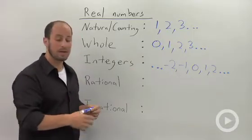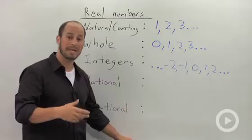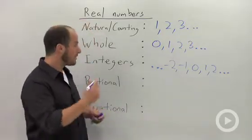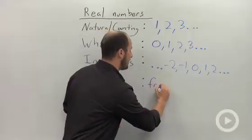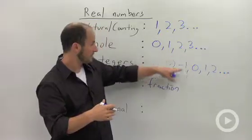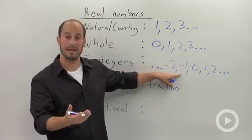Next are what we call rational numbers. A rational number is any number that can be written as a fraction. This can get a little tricky because any integer can be written as a fraction.